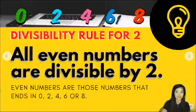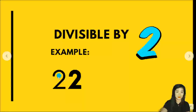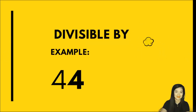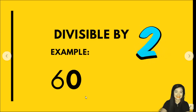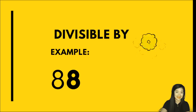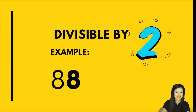The first example is 22. In 22, the 1's digit is 2. Therefore, it is divisible by 2. Next example, 44. In 44, the 1's digit is 4. Therefore, 44 is an even number and it is divisible by 2. Next is 60. The 1's digit of 60 is 0. Therefore, it is divisible by 2. The next example is 88. The 1's digit of 88 is 8, which means it is an even number. Then, 88 is divisible by 2.